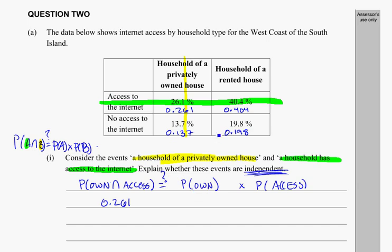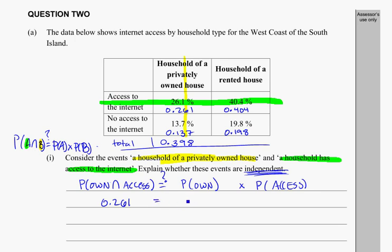The probability that they own a house comes from adding 0.261 and 0.137, so remember you can add a totals column. That gives 0.398. So the total probability of a privately owned house is 0.398.